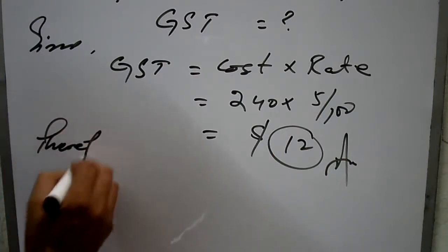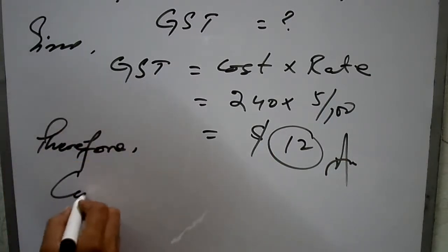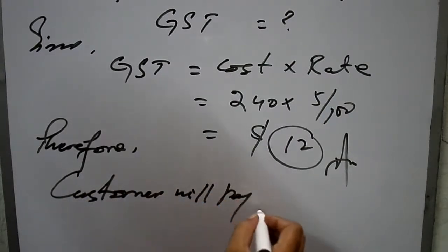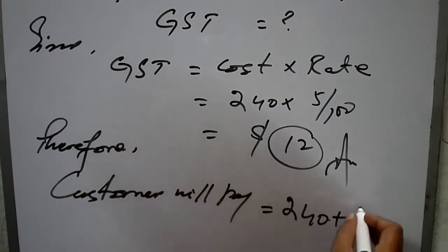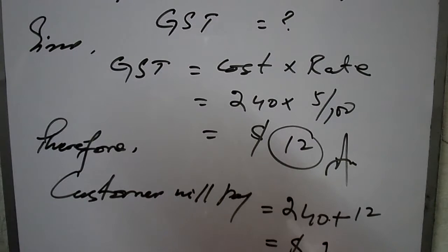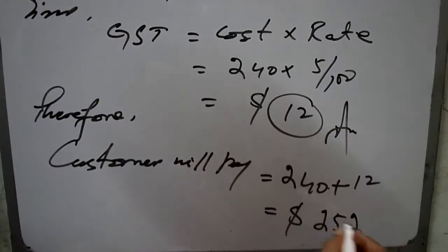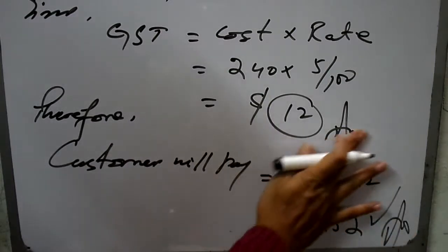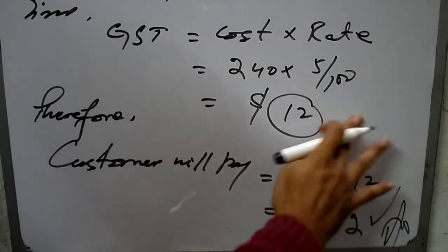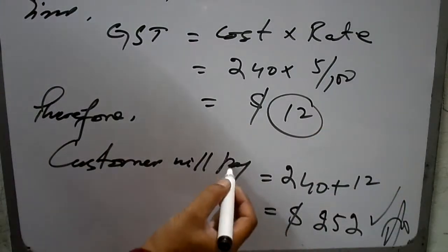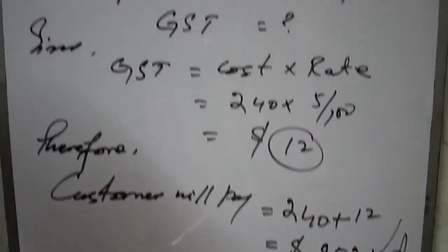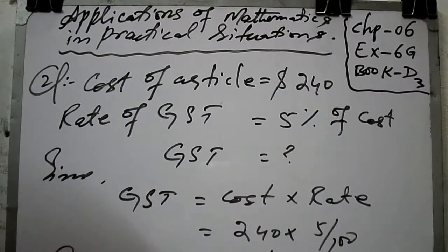GST equals $12. But the customer will pay the cost plus GST, therefore customer payment = 240 + 12 = $252. So the customer will have to pay $252. That is your required result. Customer payment has been calculated.